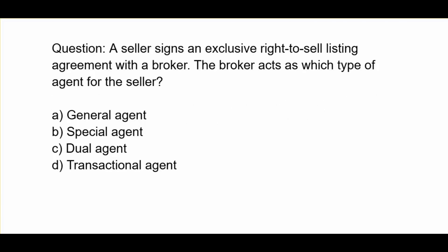A seller signs an exclusive right-to-sell listing agreement with the broker. The broker acts as which type of agent for the seller? A. General agent. B. Special agent. C. Dual agent. D. Transactional agent.